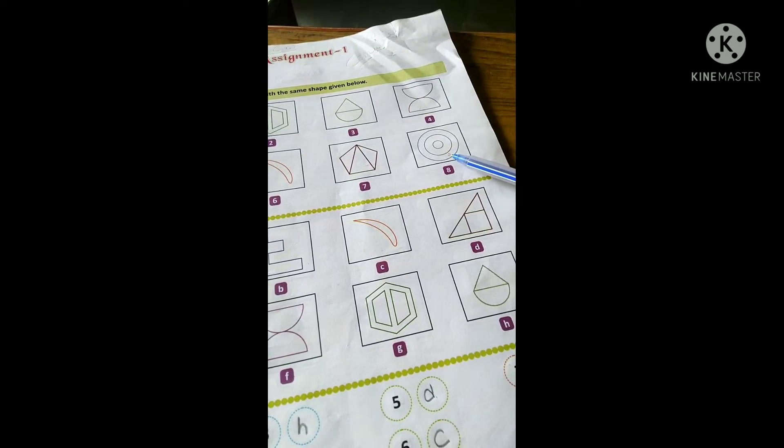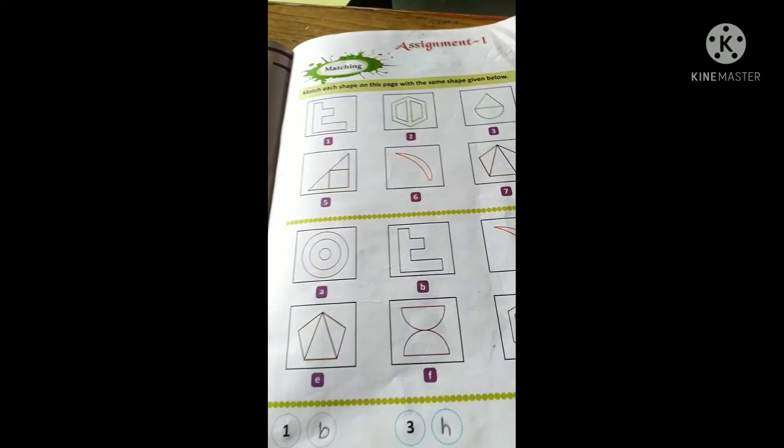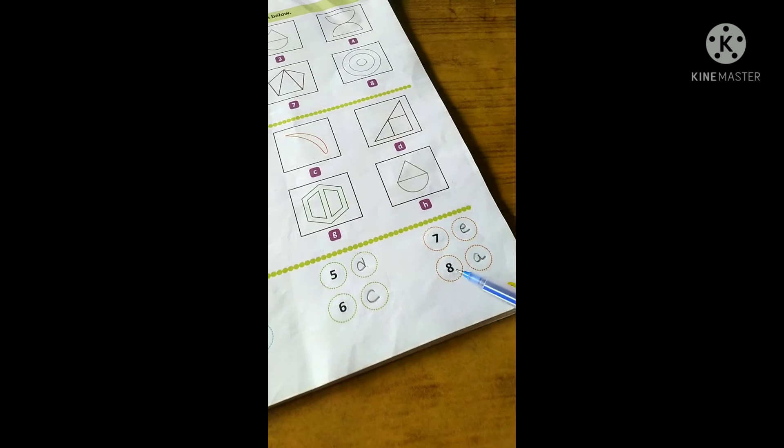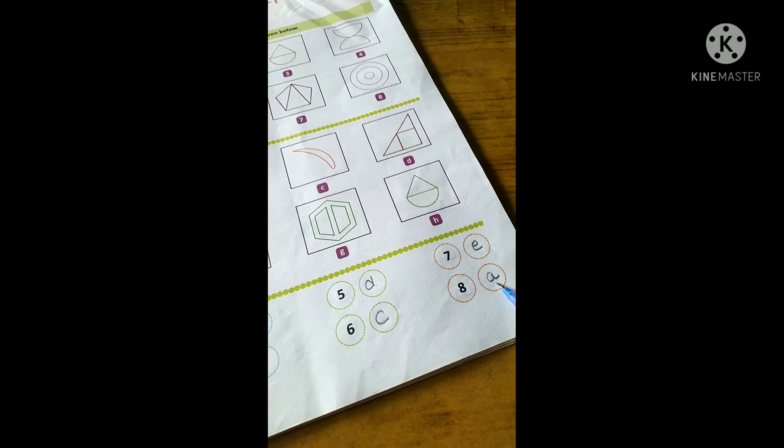Now come to figure number 8. Figure 8 is a circle. So where is the matching one? Here, figure A. So in front of number 8, we will write A. Okay.